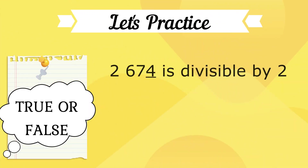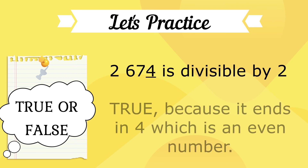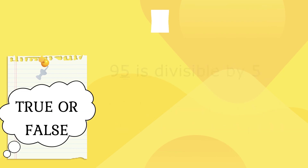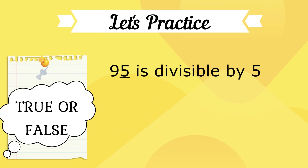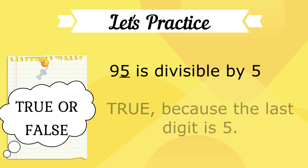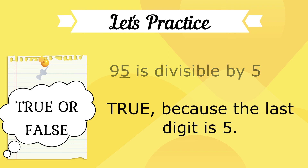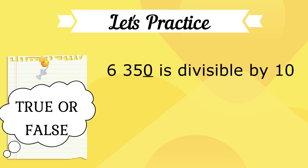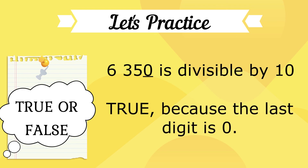Let's practice — True or False. Is 2,674 divisible by 2? True, because it ends in 4, which is an even number. Is 95 divisible by 5? True, because the last digit is 5. Is 6,350 divisible by 10? That is true, because the last digit is 0.